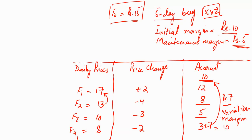On day 5 (F5), the new price is 10, which is a 2 rupee increase from the previous day's price of 8. So we write plus 2 as the price change on day 5, and our margin account comes to 12 because it was set at 10 the day earlier. This is how daily adjustments are made in the account until the maturity of the futures contract.